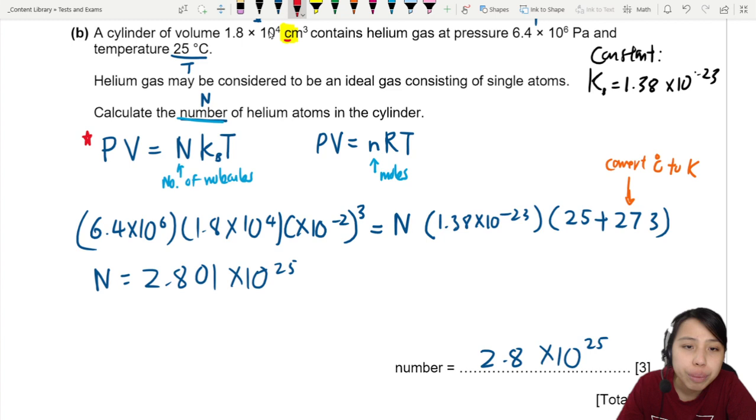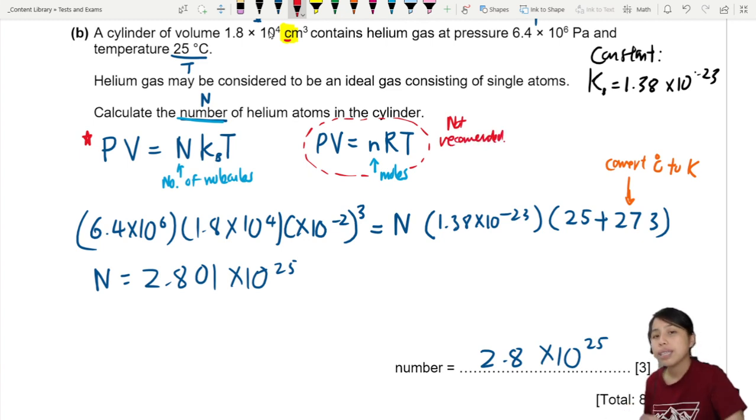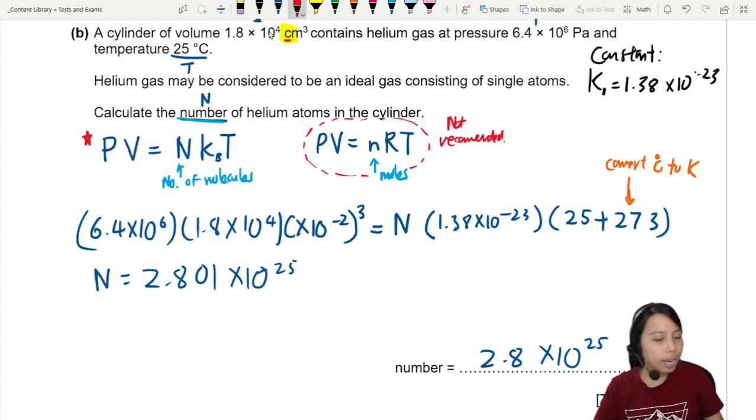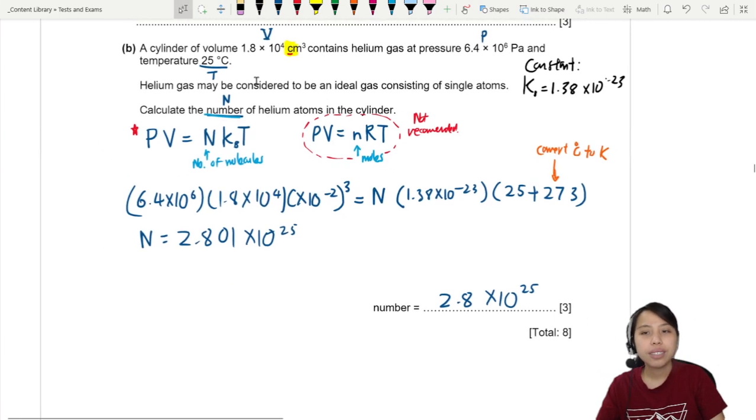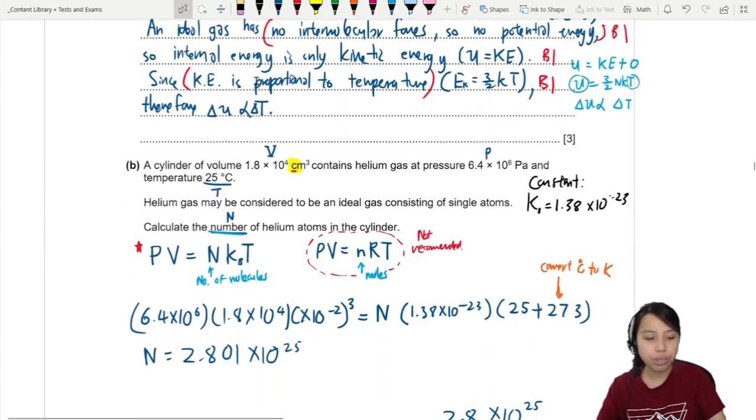So, PV equals NRT, I'm not going to show it here. But this one, not recommended if possible. Unless you want to find moles, but physics usually very rarely. Yeah, usually that'll be chemistry. Okay, I think that's the end of this question. Right? Okay, that's all for this video. See you in the next one.